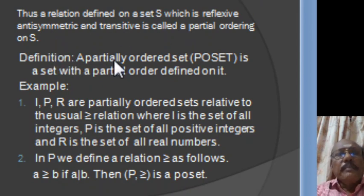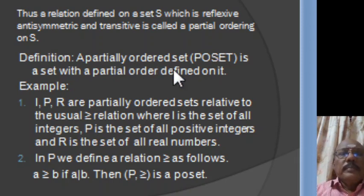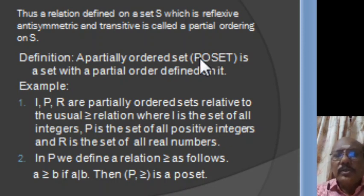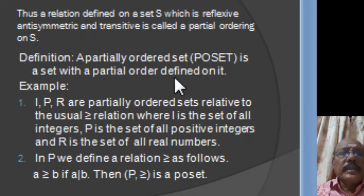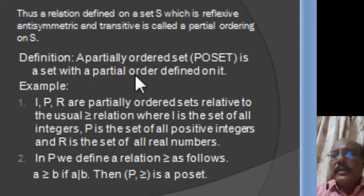A partially ordered set is simply called a poset — P stands for partially, O stands for ordered. So a partially ordered set is usually known as a poset. A poset is a set with a partial order defined on it.